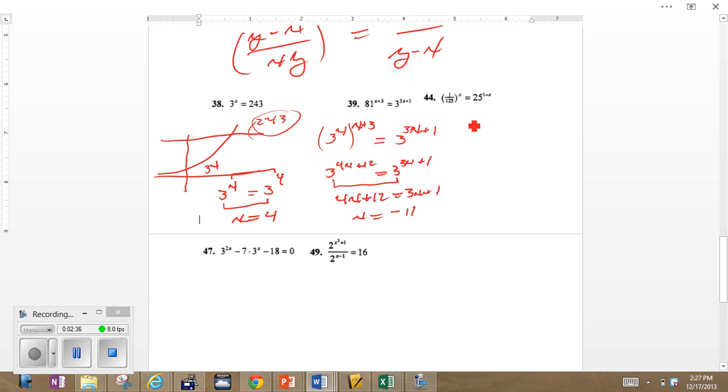1 over 125 should be recognized as 1 over 5 squared, or 5 to the negative 3 rather. 5 cubed is 125.